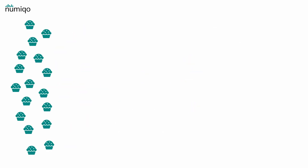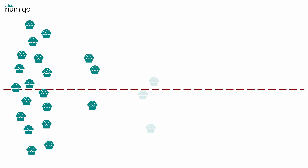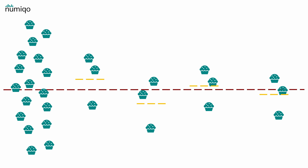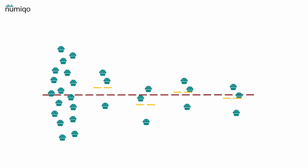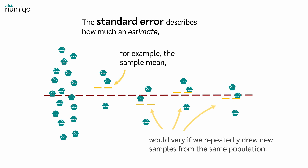Let's say here we have all our muffins and the true mean. From that population, we take four samples of three muffins each and we calculate each sample mean. Each sample will probably have a different mean. The standard error describes how much an estimate — for example, the sample mean — would vary if we repeatedly drew new samples from the same population. Therefore, a smaller standard error means the estimate is more precise and closer to the true population. A larger standard error means the estimate is less precise and more affected by sampling variation.